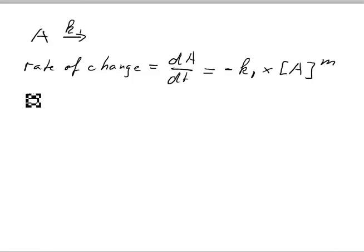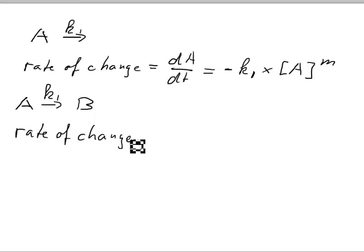Now let's have a slightly more complicated equation. So let's say we have A which is converted into a product B. We have the rate constant K1 again. Again we can write the rate of change and we can say dA/dt. We do exactly the same as we've done above.